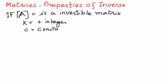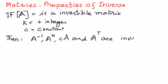then the following properties of inverse are true. So, A inverse, A to the power K, C times matrix A, and A transpose are all invertible. These could be invertible. Okay? So that is the definition. Then,